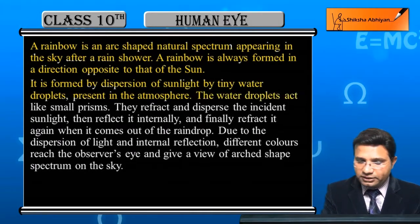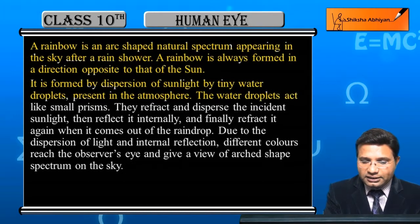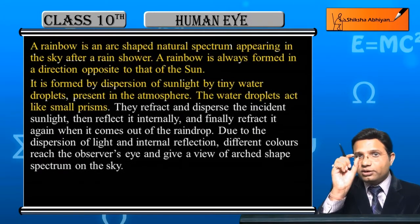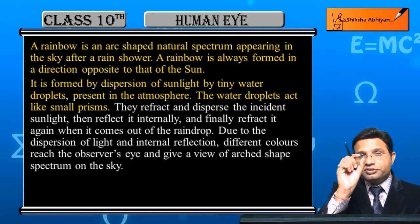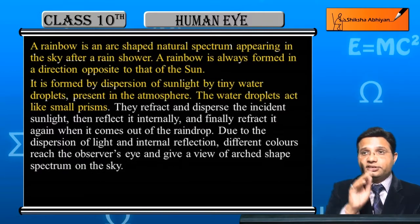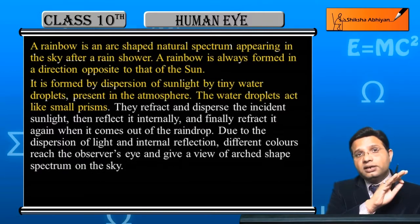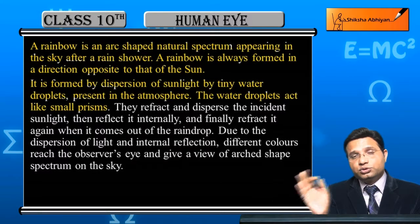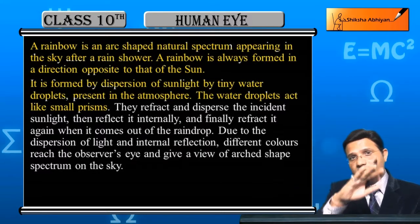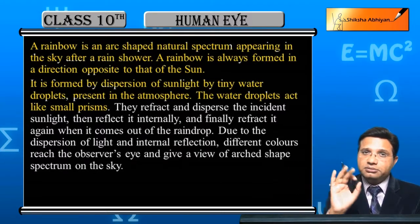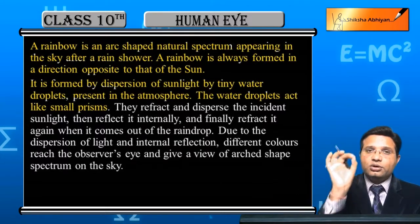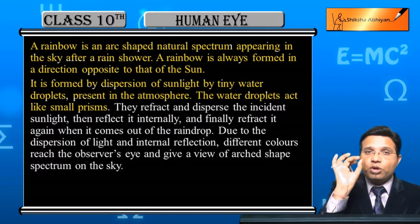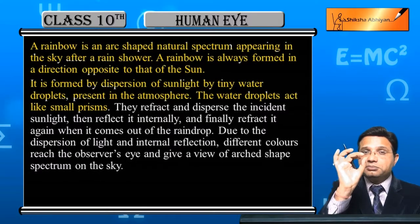Water droplets act like small prisms. Just as in a prism, white light is incident and dispersed into seven colors, the same process happens with water droplets.